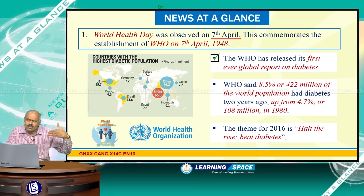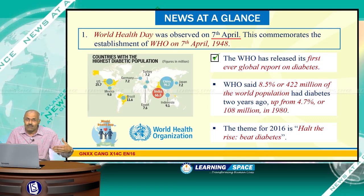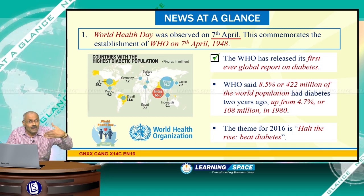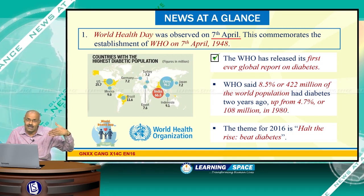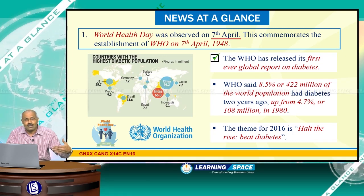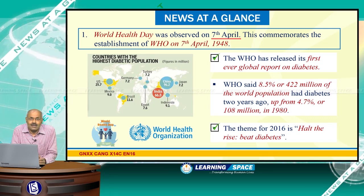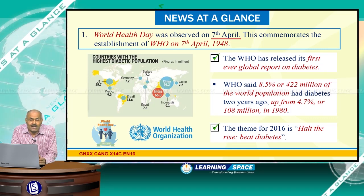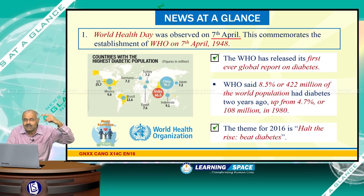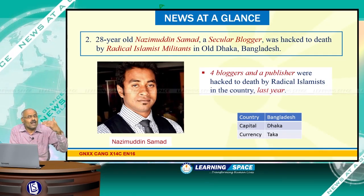The WHO has released its first ever global report on diabetes. The most worrying fact is that the incidence of diabetes increased from around 4.7 percent to 8.5 percent of the world population over the past 34-35 years. The theme for 2016 is 'Halt the Rise: Beat Diabetes.' China ranks number one in diabetes followed by India.